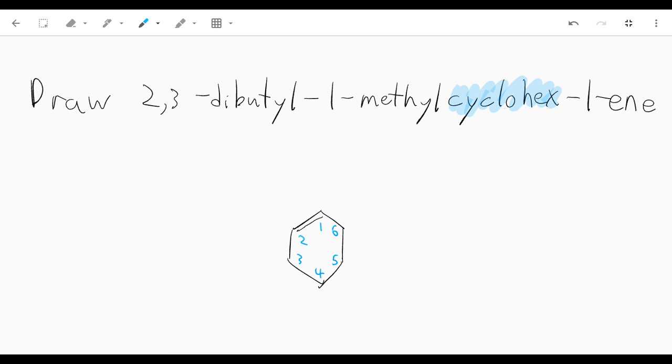We have a methyl group coming off of carbon one, so that will just be a single line.